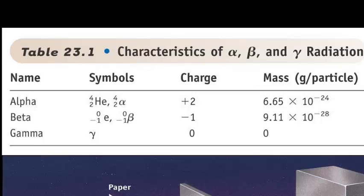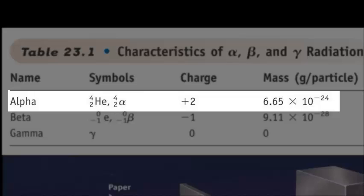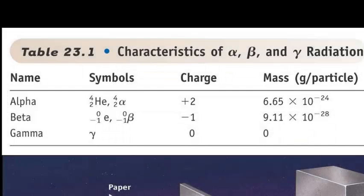We call them alpha, beta, and gamma radiation. They are summarized in this graphic rather nicely. The symbol for alpha—there are two symbols commonly used. The first is the symbol for a helium-4 atom. The other has the same mass number 4 and 2, but with the symbol alpha. An alpha particle is just a helium-4 nucleus with no electrons, which is why it has a charge of plus 2. Its mass is fairly big, 6.65 times 10 to the negative 24th grams for each particle. When we're talking about tiny particles, that's a significant mass. Alpha particles are pretty big.